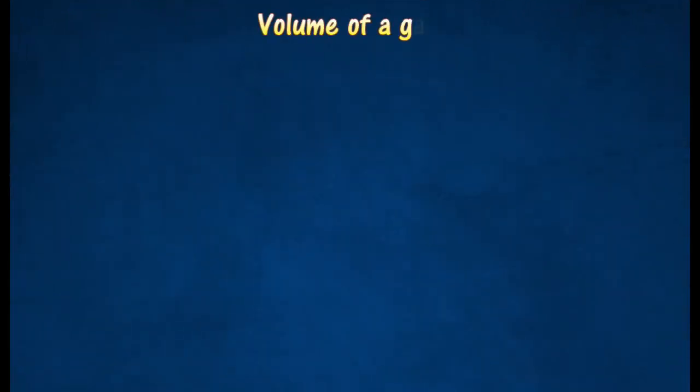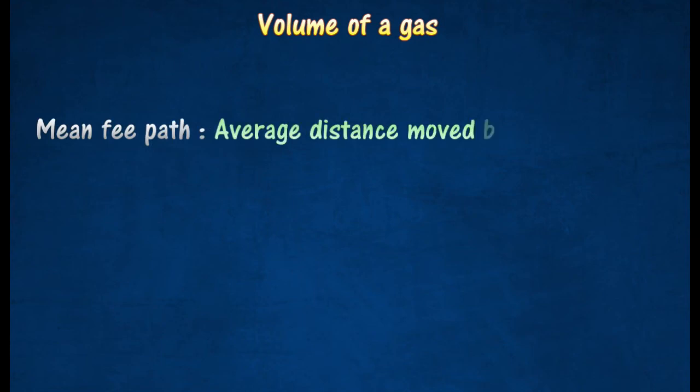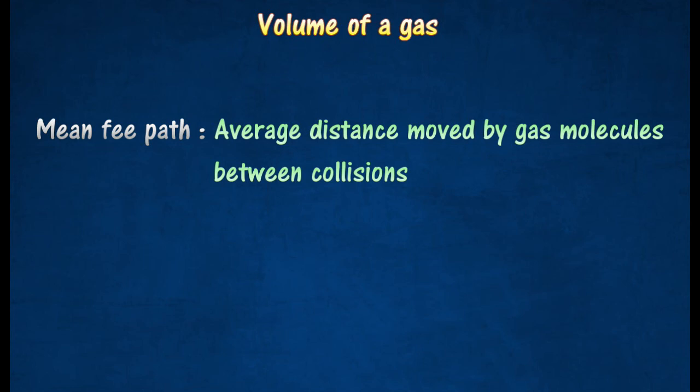The volume of a gas depends on the average distance moved by its molecules between collisions. The average distance moved by gas molecules between collisions is known as mean free path.